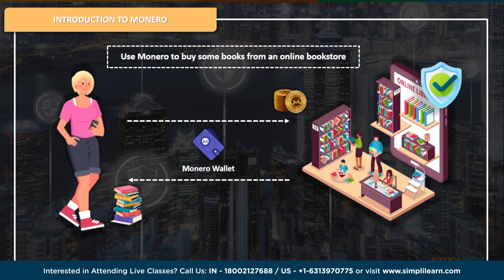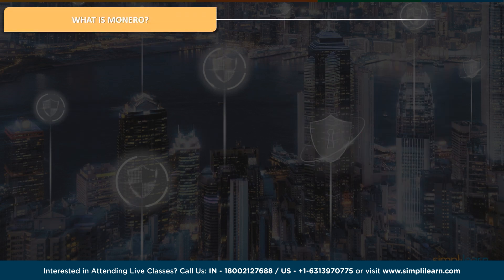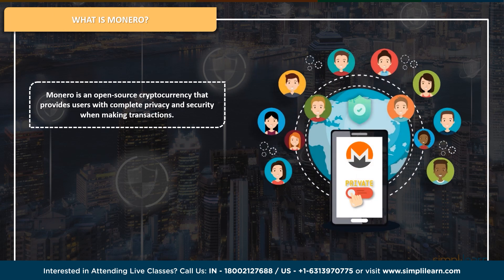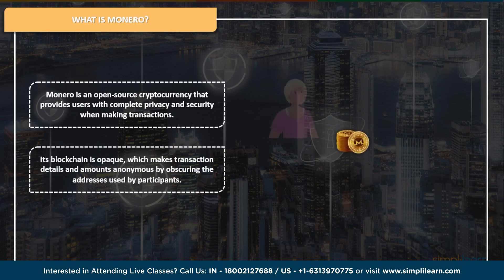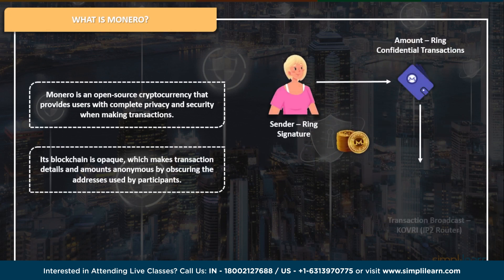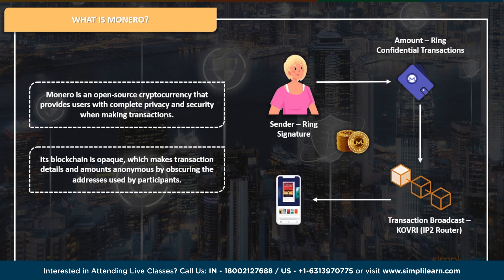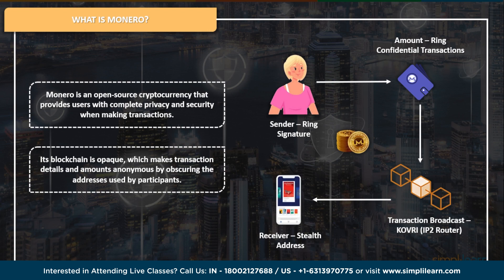In short, Monero is an open-source, privacy-oriented digital cryptocurrency that provides users with complete privacy and security when making a transaction. Its blockchain is opaque, which makes transaction details and amounts anonymous by obscuring the addresses used by participants. Lena's story is just one example of how Monero can be used to protect one's financial privacy and security in a world where data is becoming more and more valuable.